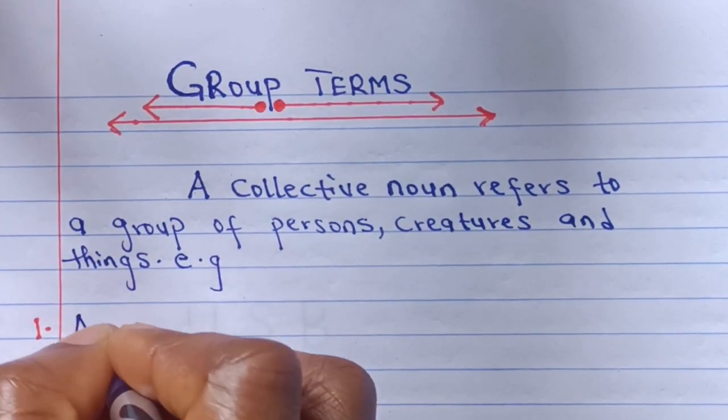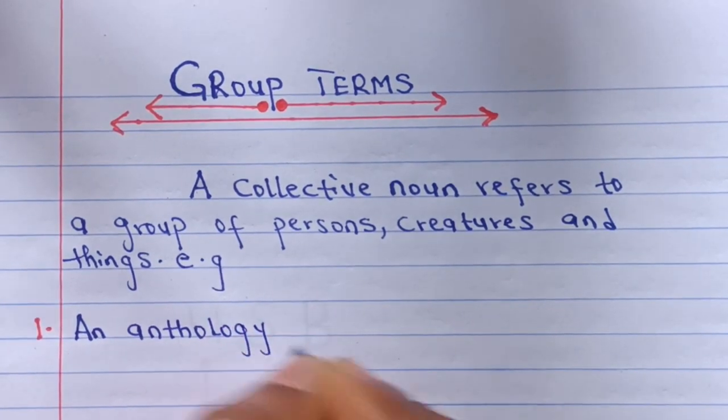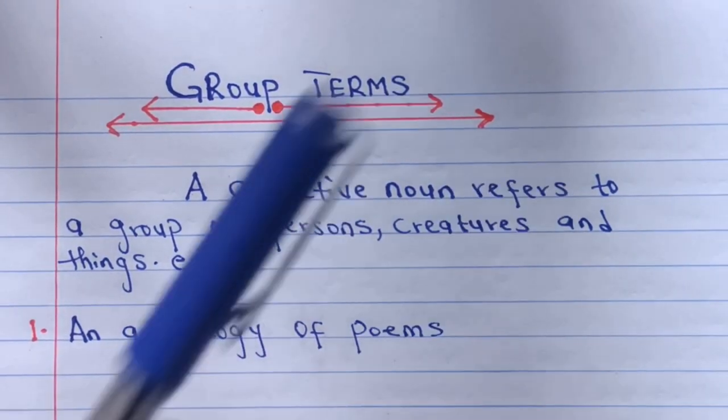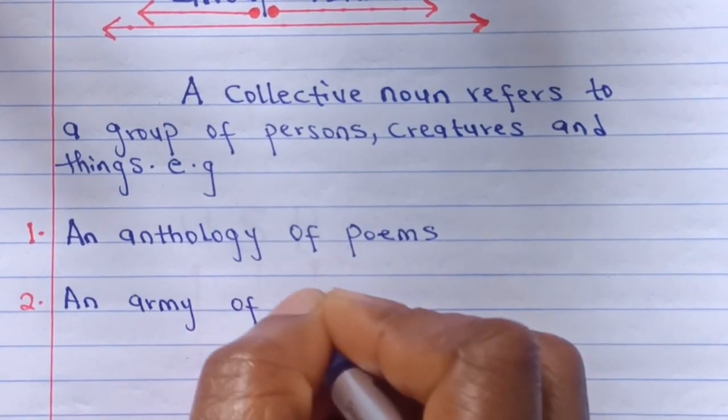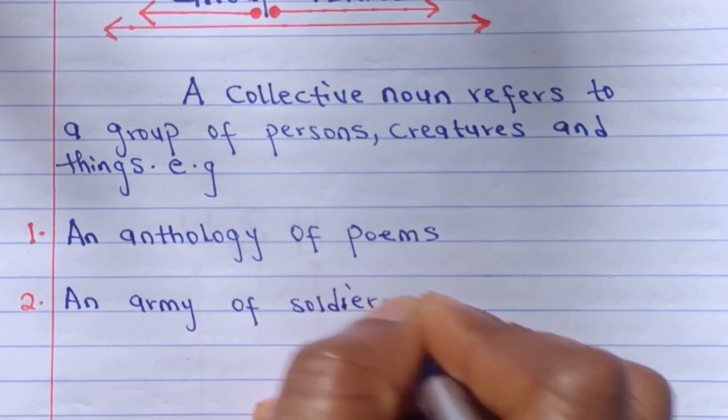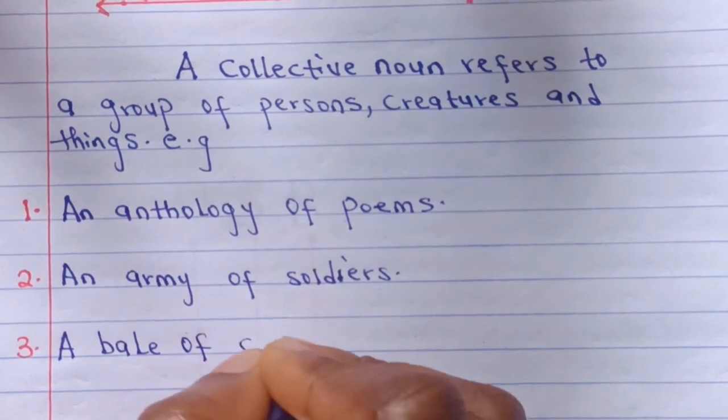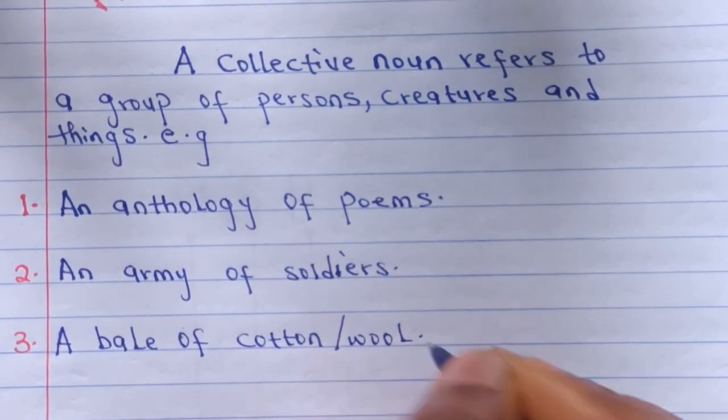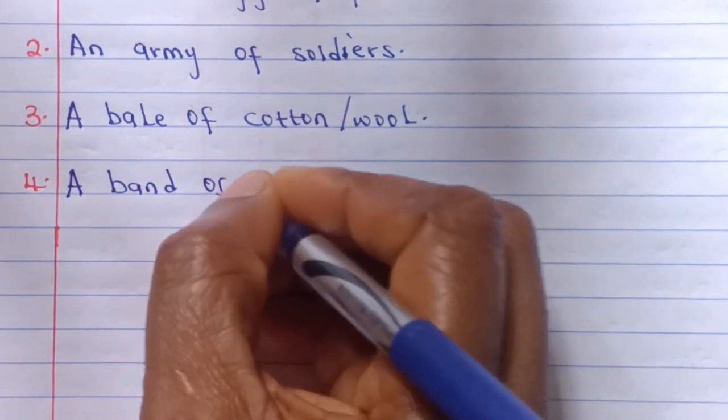Example, we have an anthology of poems, an army of soldiers, a bear of cutting or wound, a band of musicians